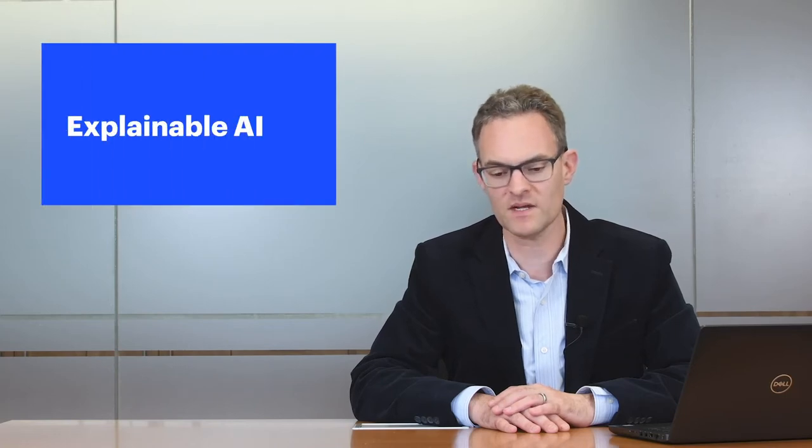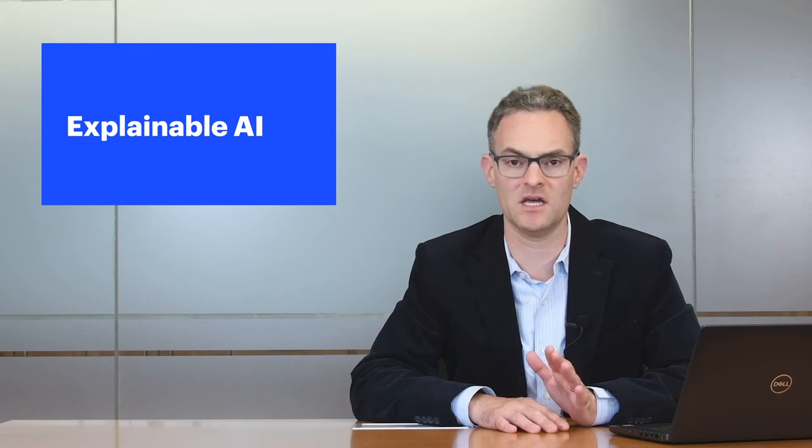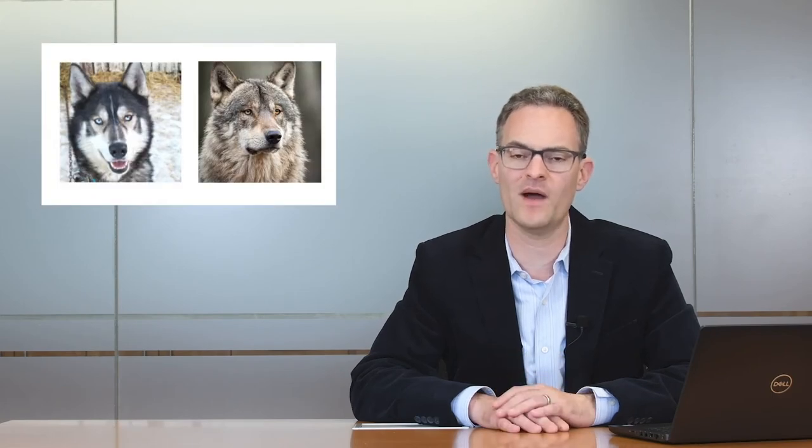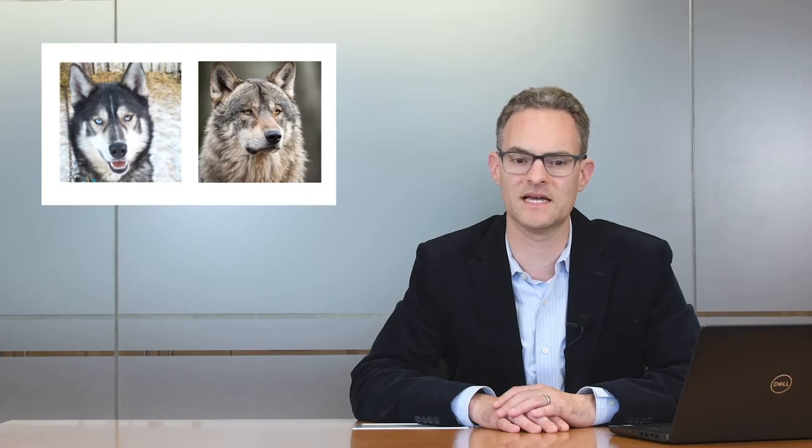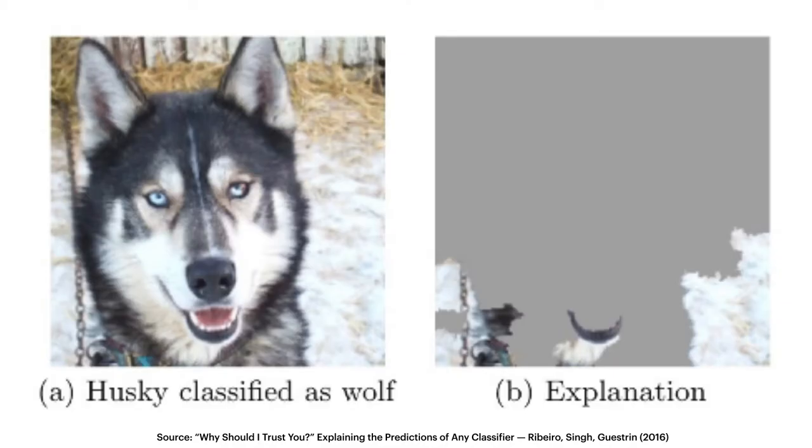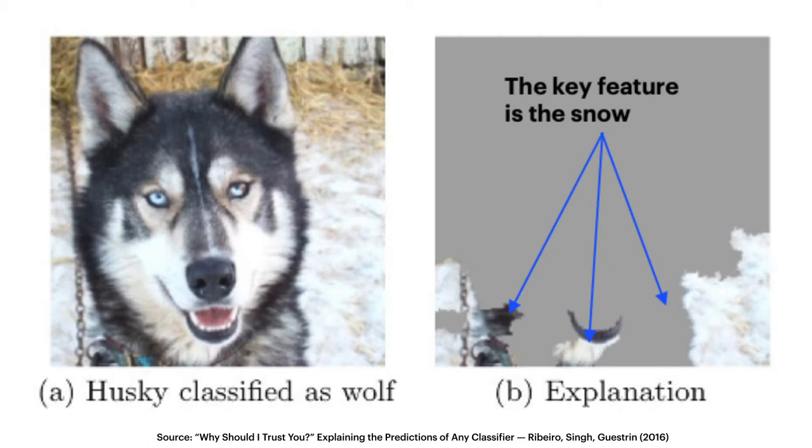And the third example I'll show you is what's called explainable AI. In this example, an algorithm was used to differentiate between a husky and a wolf. And then when you ask the algorithm, why did you think that was a wolf? It says, because of this. And the thing it points to is the background. And it turns out that the wolves were often photographed in front of snow, and the huskies were photographed in front of grass or dirt. And the key feature the computer found was actually the background, not the animal. And so when you're training these algorithms, you have to be very careful that you don't set up the problem incorrectly.